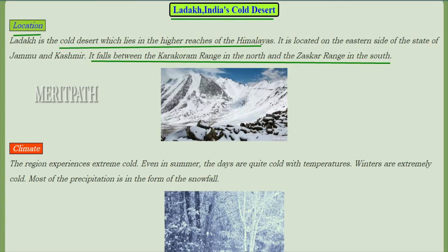Now, Ladakh — it is India's coldest desert. It is located in the higher reaches of the Himalayas, on the eastern side of the state of Jammu and Kashmir. It falls between the Karakoram range in the north and the Zaskar range in the south.